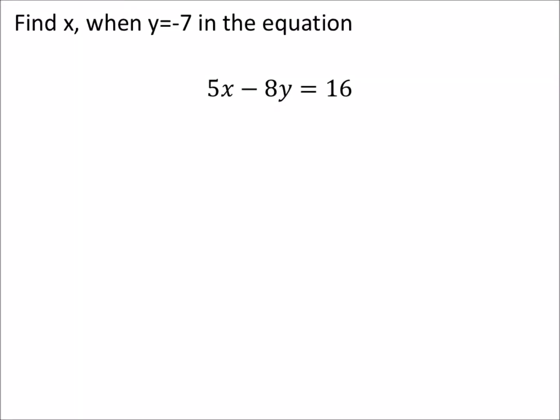Alright, find x when y is negative 7. This goes into the ordered pair thing, where our answer would be an ordered pair. Our y value is going to be negative 7 like this.